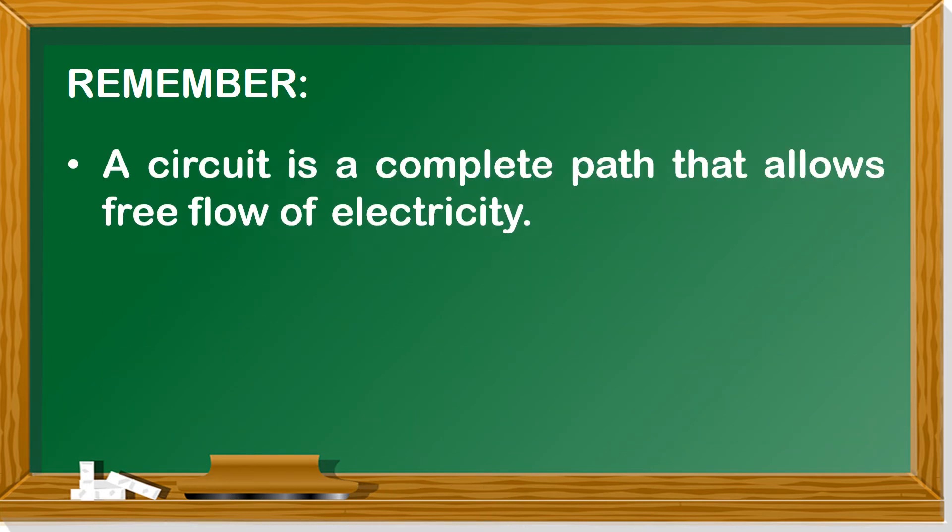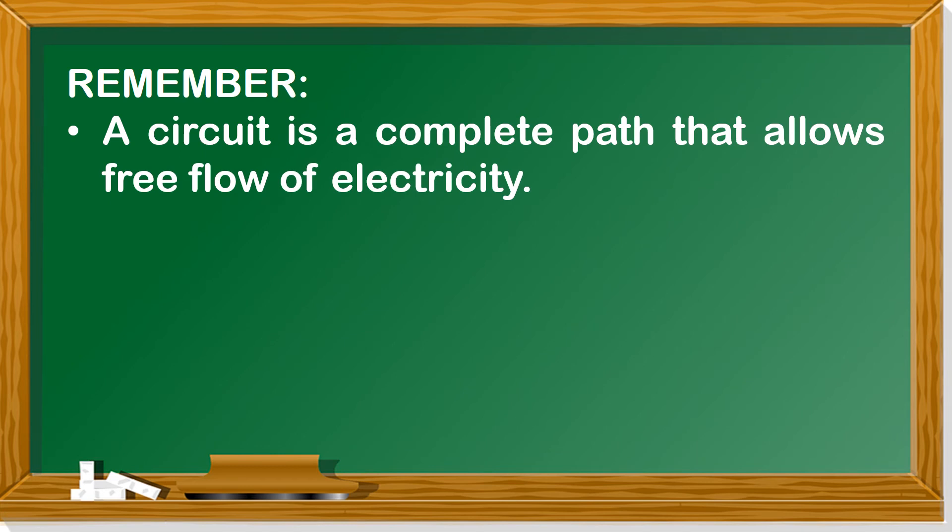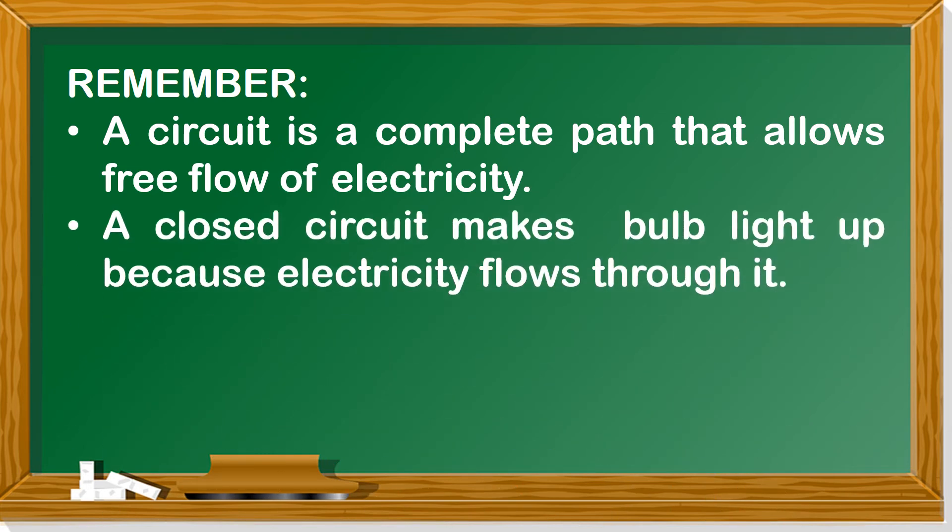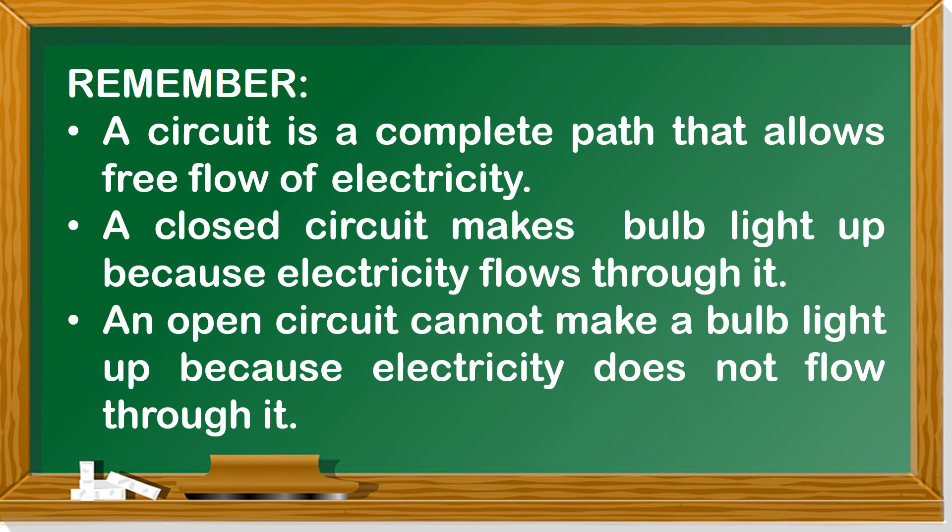Remember, a circuit is a complete path that allows free flow of electricity. A closed circuit makes bulb light up because electricity flows through it. An open circuit cannot make a bulb light up because electricity does not flow through it.